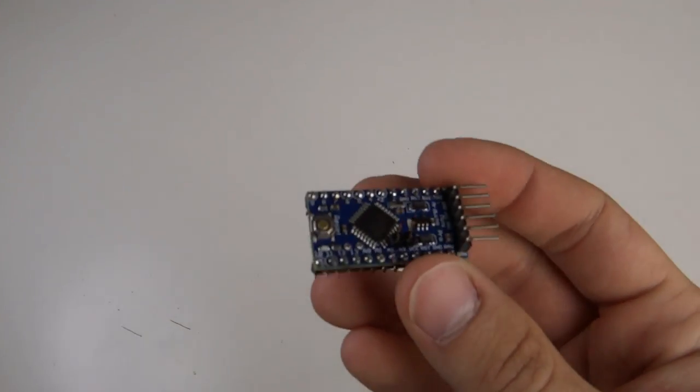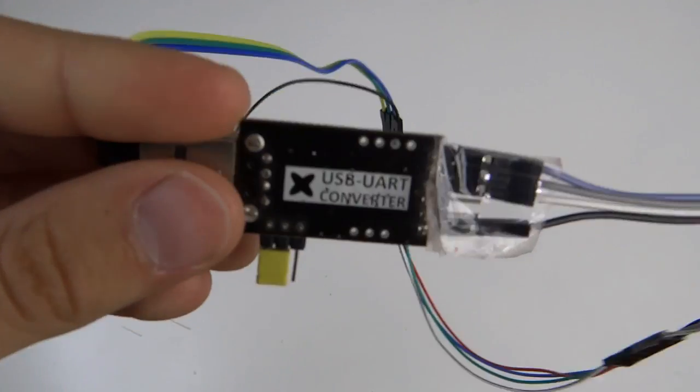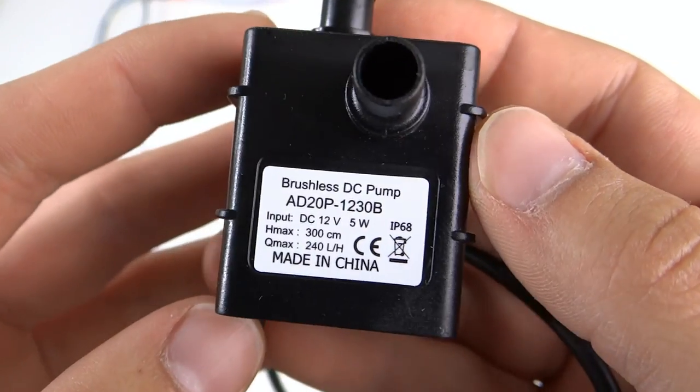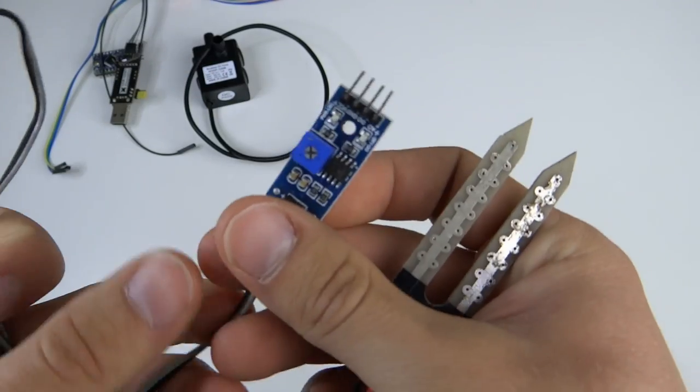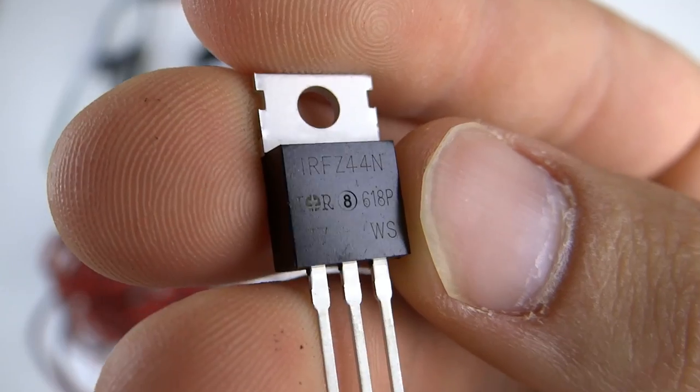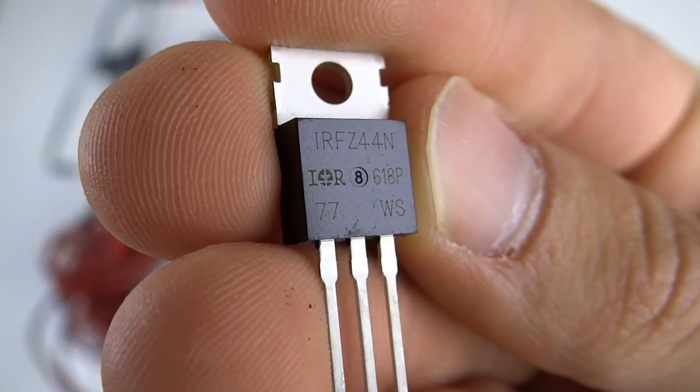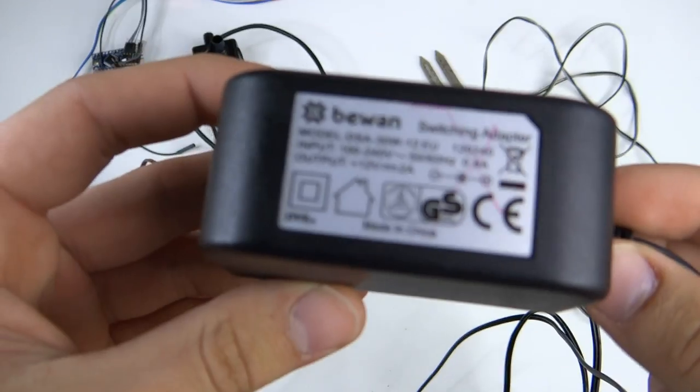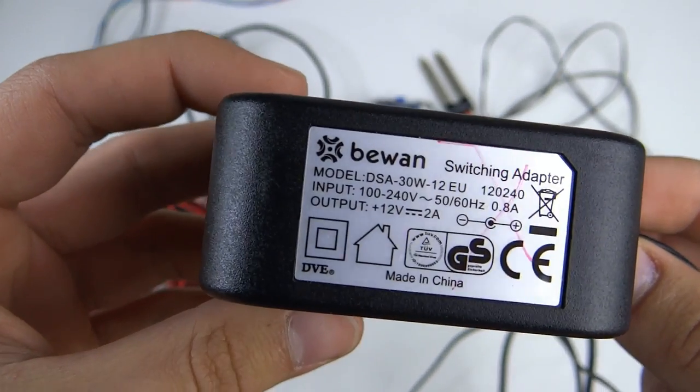To make this project we will need: Arduino Pro Mini, USB to UART converter to upload program to Arduino, 12-volt water pump, moisture sensor, some cables, IRFZ44N MOSFET or similar, DC socket, 12-volt power supply or battery, hose, and breadboard cables.